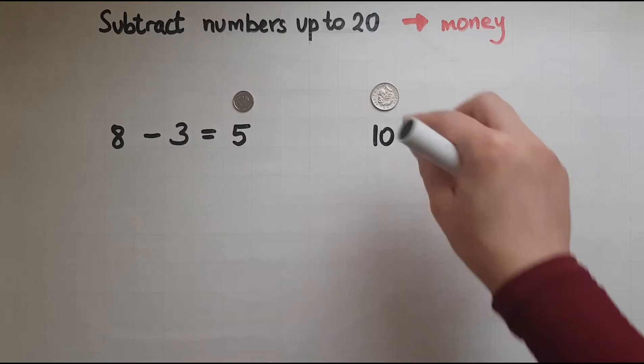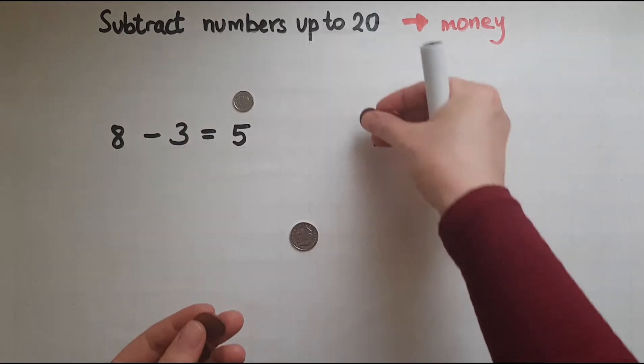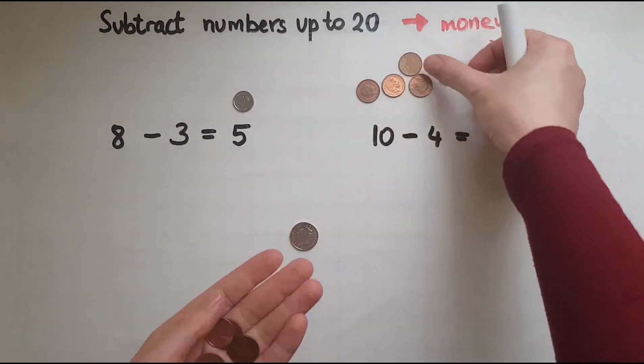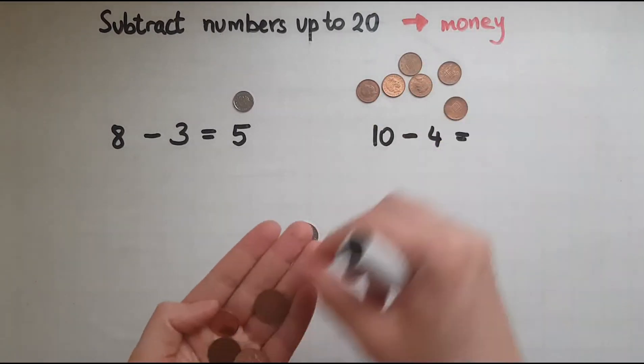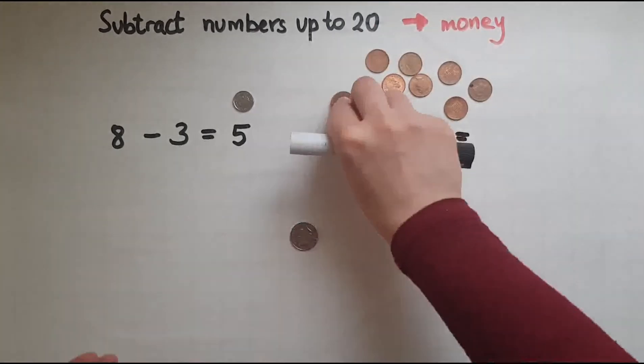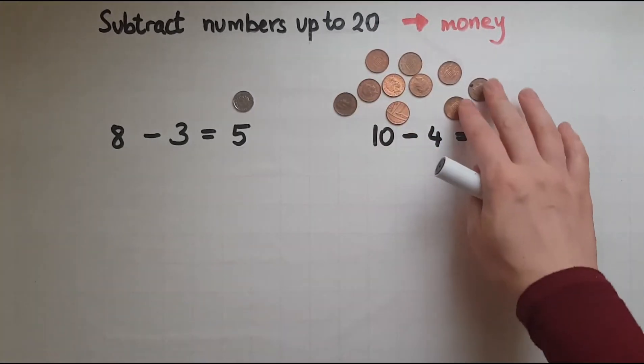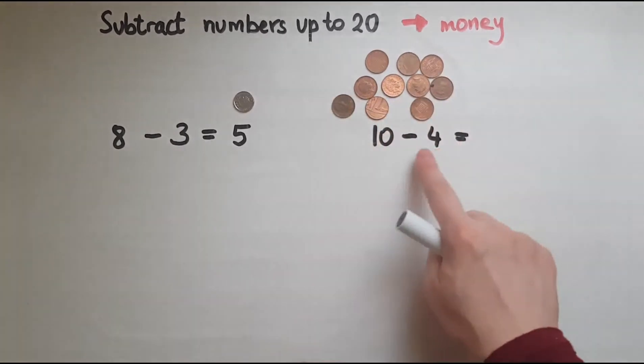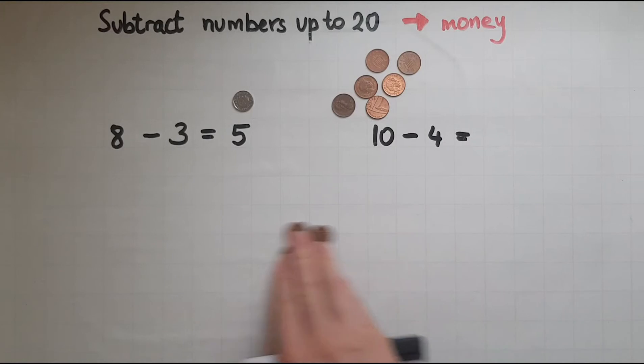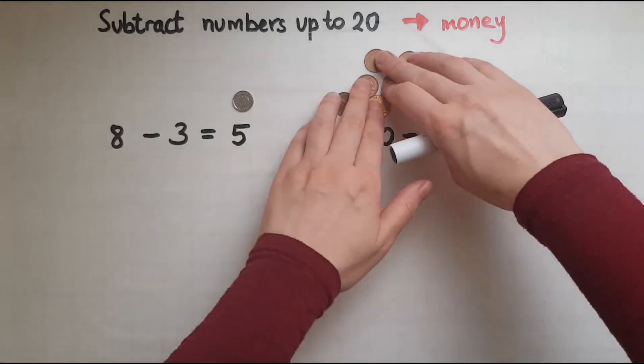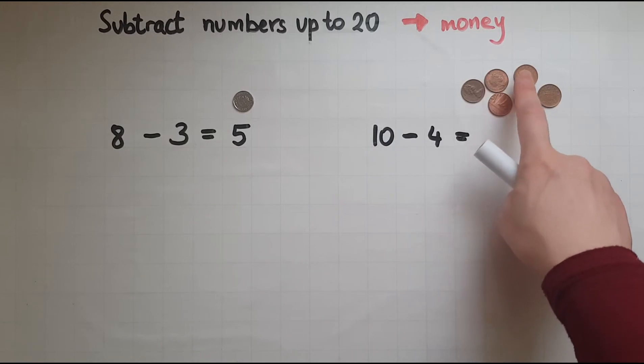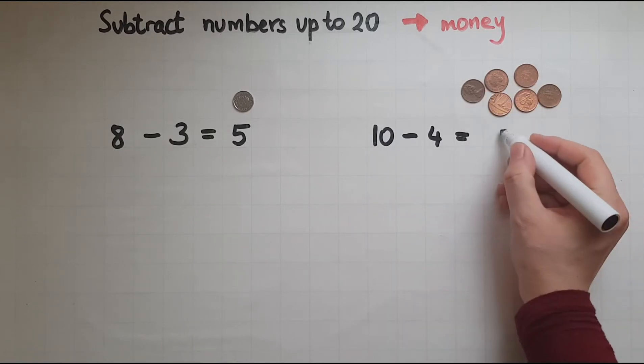So I take away that to get 1, 2, 3, 4, 5, 6, 7, 8, 9, 10. So out of this 10, I take away 4: 1, 2, 3, 4. So what do I have left? I have left 1, 2, 3, 4, 5, 6. 6p.